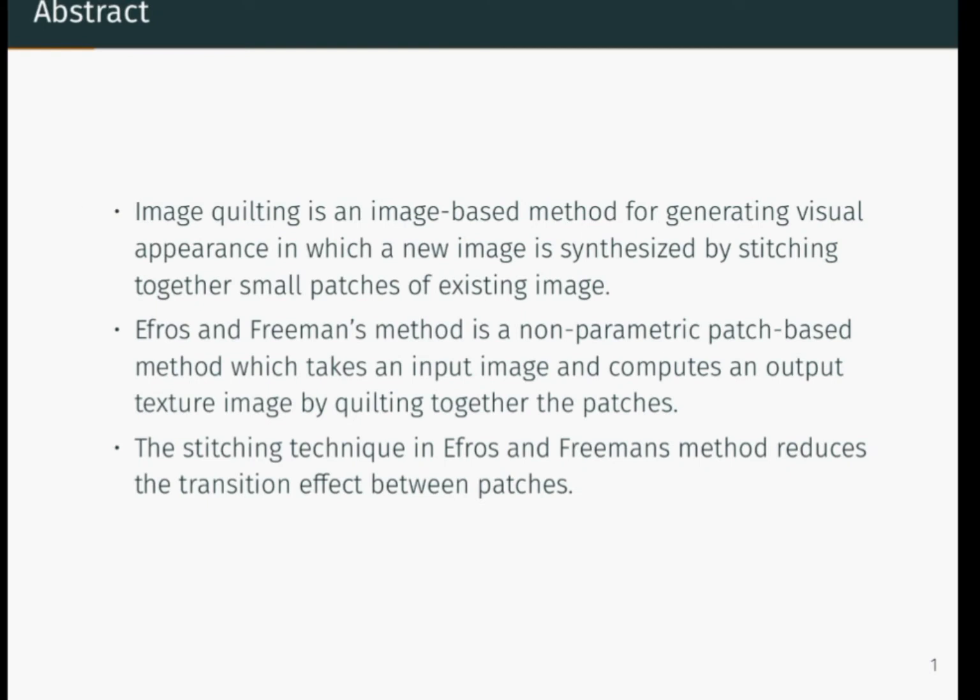Image Quilting is an image-based method for generating visual appearance in which a new image is synthesized by stitching together small patches of existing images. Efros and Freeman's method is a non-parametric patch-based method which takes an input image and computes an output texture image by quilting together patches. The stitching technique reduces the transition effect between patches.